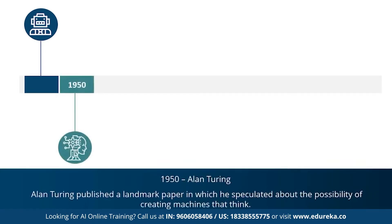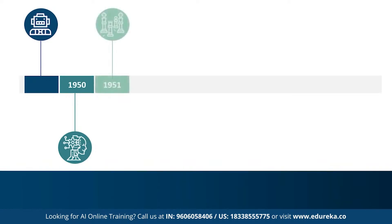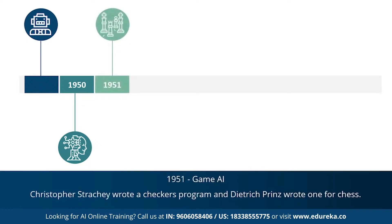In 1950, Alan Turing proposed the Turing test, which basically determines whether or not a computer can intelligently think like a human being. The Turing test was the first serious proposal in the philosophy of artificial intelligence. 1951 marked the era for game AI, because computer scientists developed programs for checkers and chess. However, these programs were later rewritten and redone in a better way.